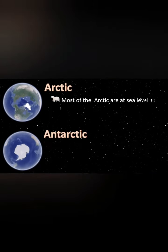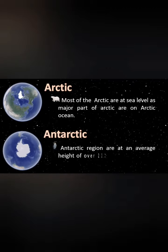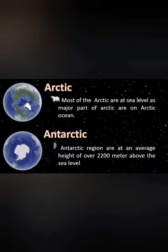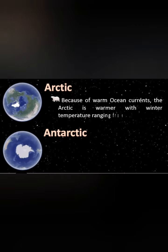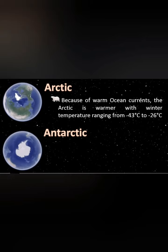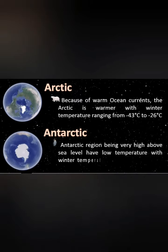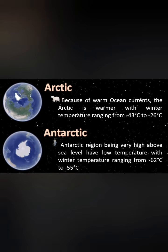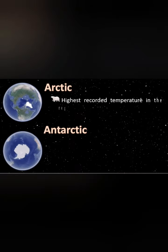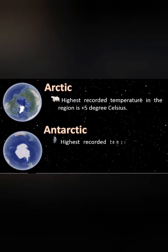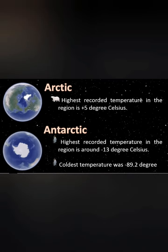Most of the Arctic is at sea level since a major part is on the Arctic Ocean, while the Antarctic region is at an average height of over 2,200 meters above sea level. Because of warm ocean currents, the Arctic is warmer, with winter temperatures ranging from minus 43 to minus 26 degrees Celsius. The Antarctic region, being very high above sea level, has lower temperatures ranging from minus 62 to minus 55 degrees Celsius. The highest recorded temperature in the Arctic is plus 5 degrees Celsius, while in Antarctica it is around minus 13 degrees Celsius, with a lowest recorded temperature below minus 89 degrees Celsius.